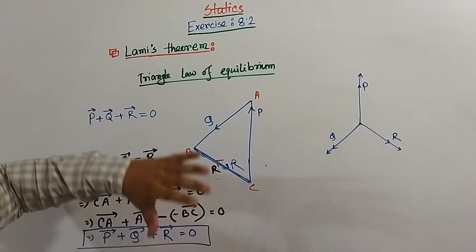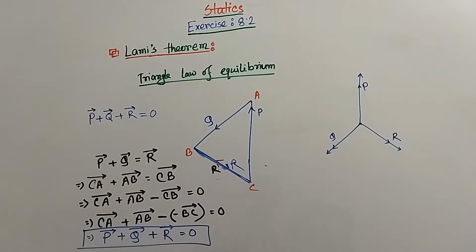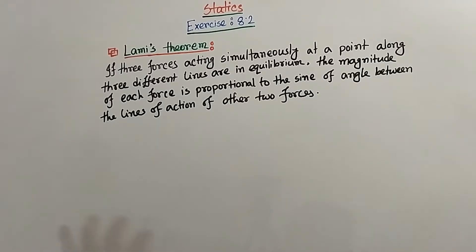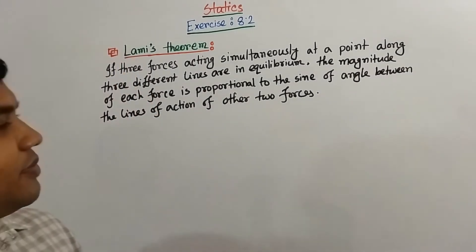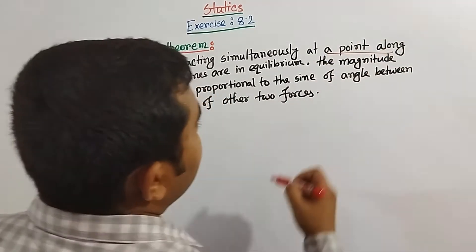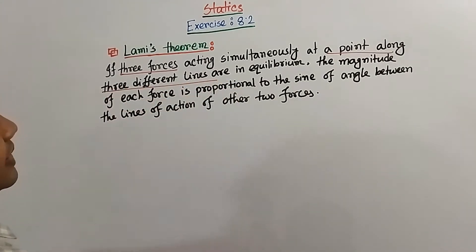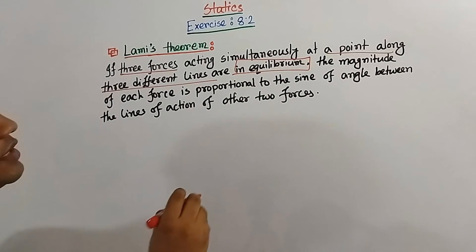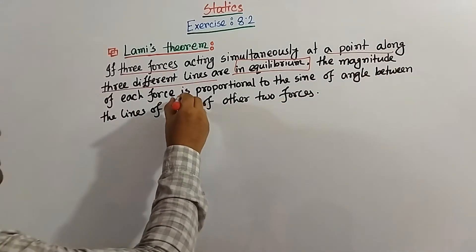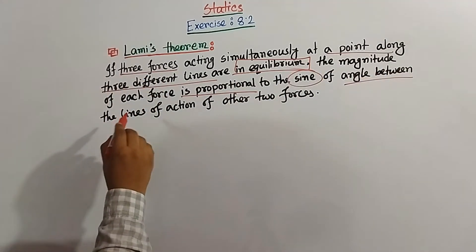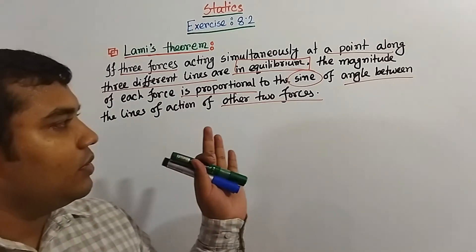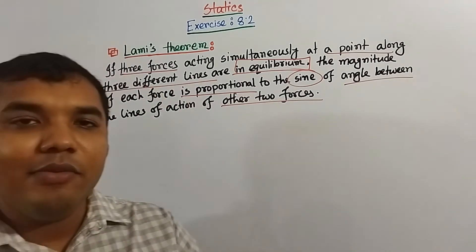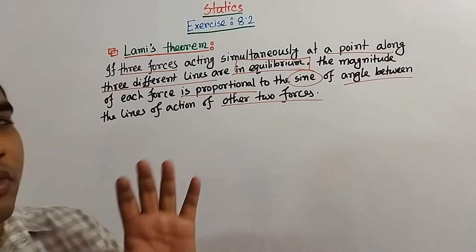So this is the law of equilibrium. And from here, we are trying to understand Lamy's theorem. So, dear students, now we are going to discuss about our main topic — Lamy's theorem. What does the statement actually say? The statement of Lamy's theorem says that if three forces are acting simultaneously at a point, along three different lines in equilibrium, the magnitude of each force is proportional to the sine of the angle between the lines of action of the other two forces.